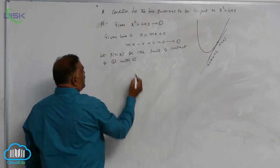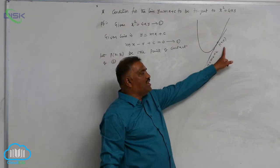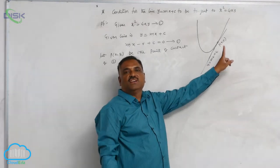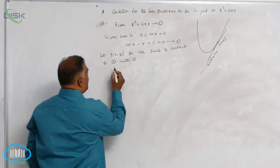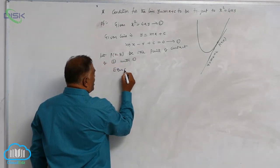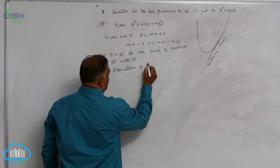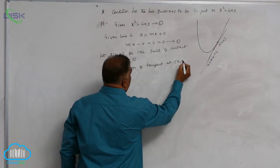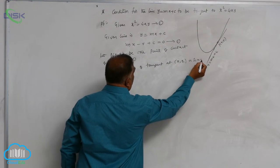See, earlier we discussed it: when a point lies on the curve, tangent equation at that particular point is S1 is equal to 0. So equation of tangent at (x1, y1) is S1 is equal to 0.